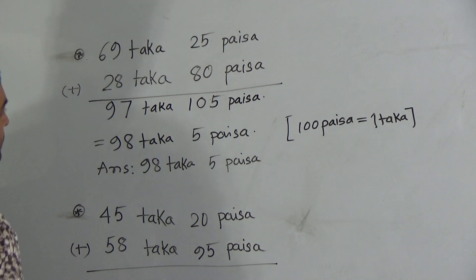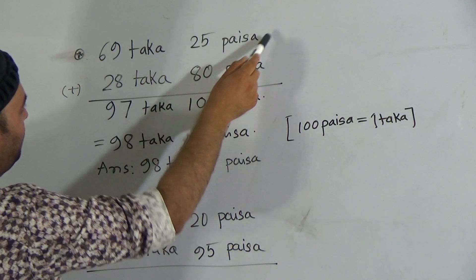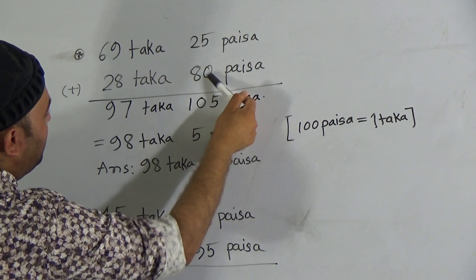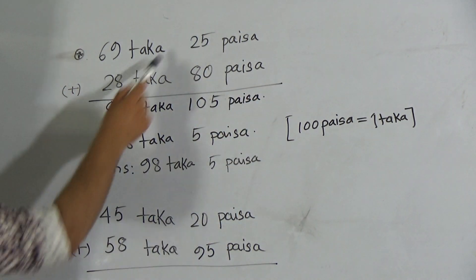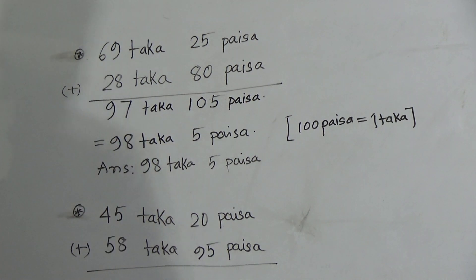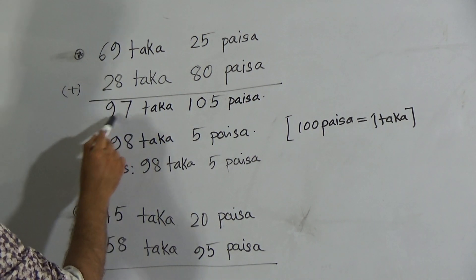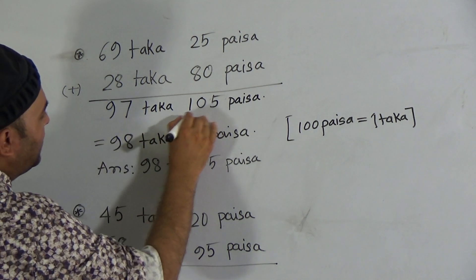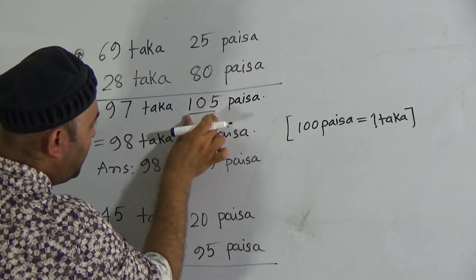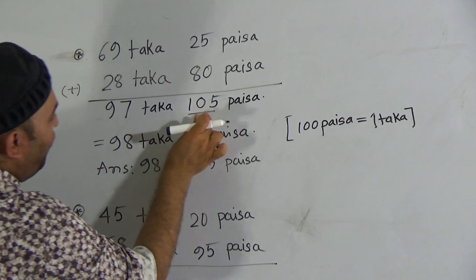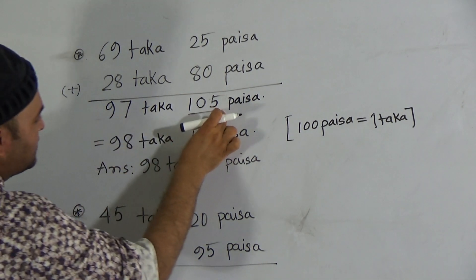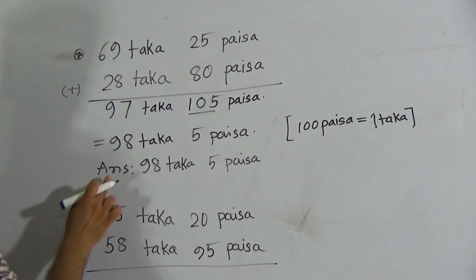My listeners, hope you understood this one. Again I repeat this one. First of all we have to add the paisa. Here is 25 paisa and 80 paisa, and after adding 25 and 80 it will be 105 paisa. Then go to the taka option. Here is 69 taka and 28 taka. After adding 69 and 28, it will be 97 taka. Since here is 105 paisa, we know that 100 paisa makes one taka. Then we will take 100 paisa from it, so that makes one taka and it will be added with this 97 and it makes 98 taka. And here is remaining 5 paisa, so the correct answer will be 98 taka and 5 paisa.